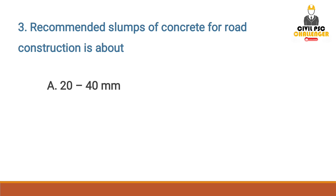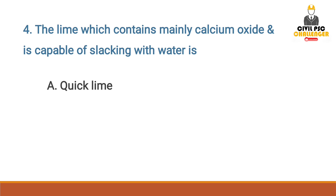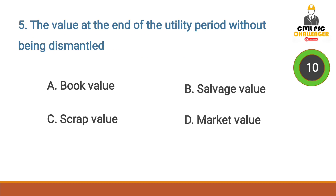Time's up — option A: 20 to 40 mm. Next question: the lime which contains mainly calcium oxide and is capable of slaking with water is — option A: quicklime. Next question: the value at the end of the utility period without being dismantled...